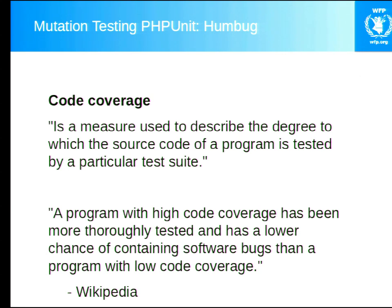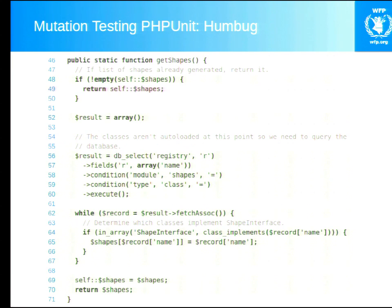Wikipedia goes on to say a program with high code coverage has been more thoroughly tested and has a lower chance of containing software bugs than a program with low code coverage. To get really clear on what this means: in this example method called getShapes, there are 15 lines of potentially executable code. You see 14 green lines — those are the lines covered by unit tests — and one red line that has not been covered. So in total, 14 out of 15 lines gives 93.3% code coverage for this particular method.